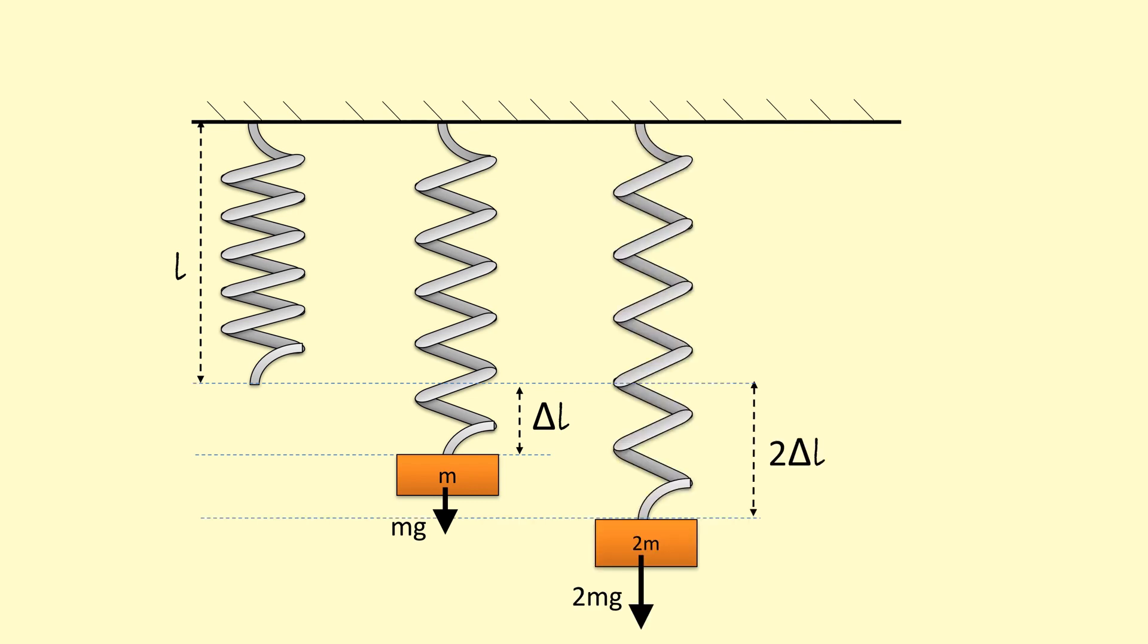And if I hang double the mass and we're applying double the force, then we expect the extension to double. This is what directly proportional means. If I hang something that's triple, it's going to triple and so on.